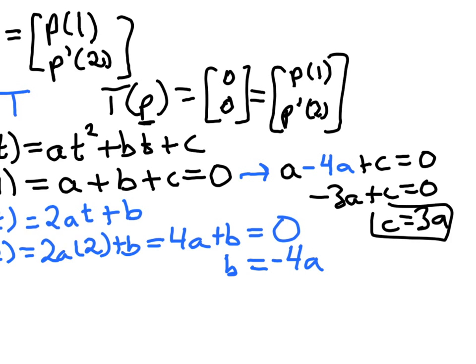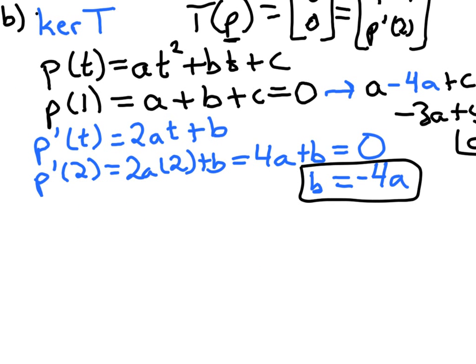So we know this, we know this. So going back to our generic polynomial here, and substituting what we know, b is equal to -4a, c is equal to 3a, I can write this polynomial, our polynomial in the kernel, as at²+(-4a)t+3a.